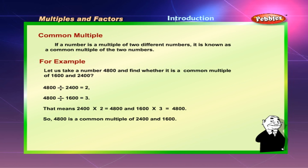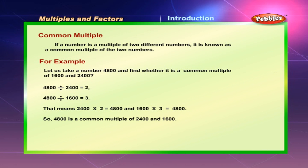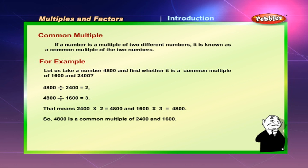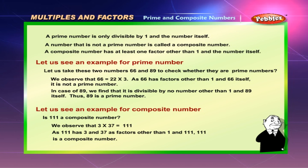Common multiple: if a number is a multiple of two different numbers, it is known as a common multiple of those two numbers. For example, take 4,800 and find whether it is a common multiple of 1,600 and 2,400. Since 2,400 into 2 equals 4,800 and 1,600 into 3 equals 4,800, so 4,800 is a common multiple of 2,400 and 1,600.